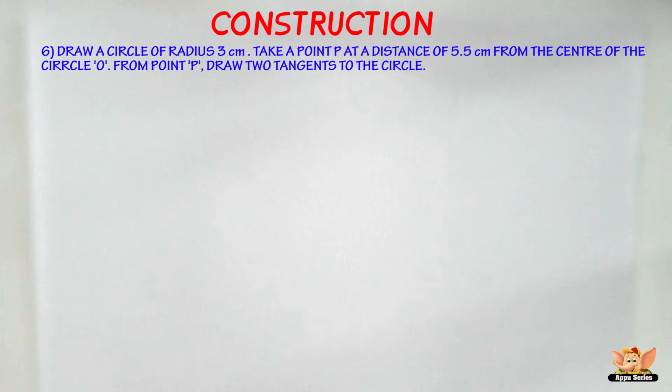So we've got a question here. Draw a circle of radius 3 cm. Take a point at a distance of 5.5 cm from the center of the circle. From point P, draw two tangents to the circle.